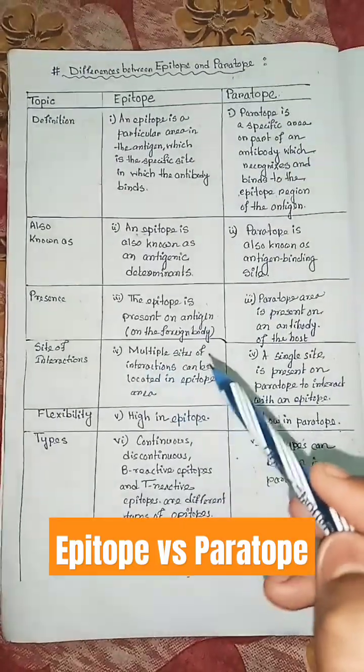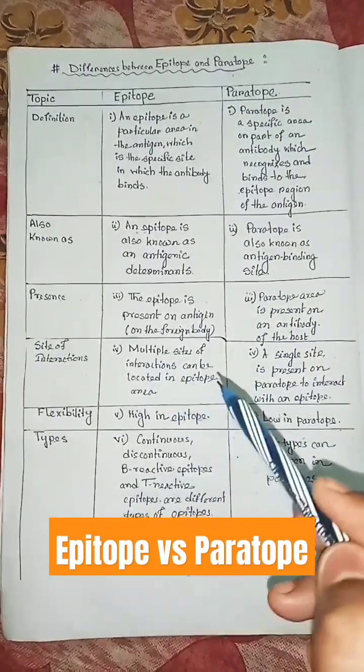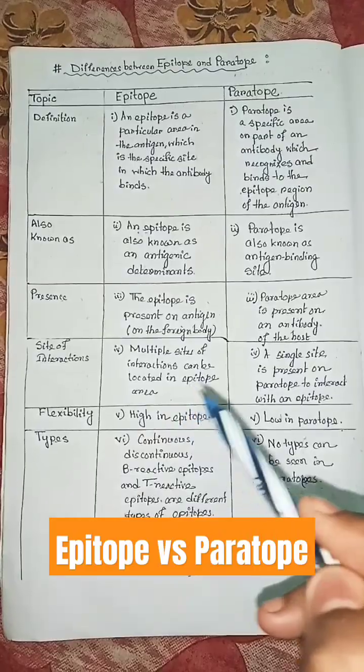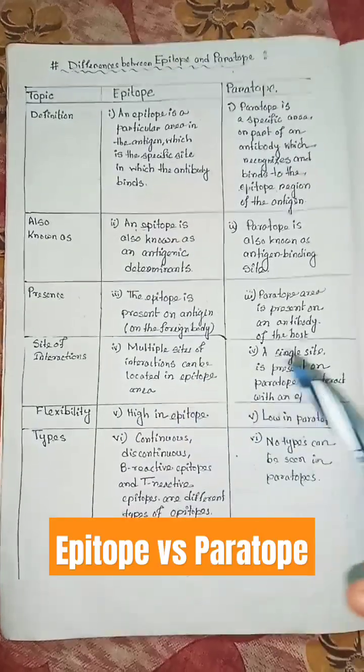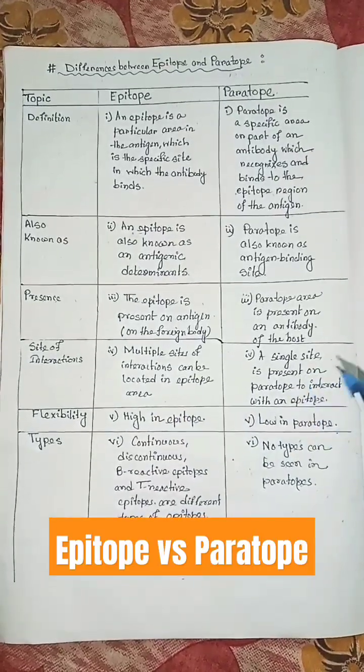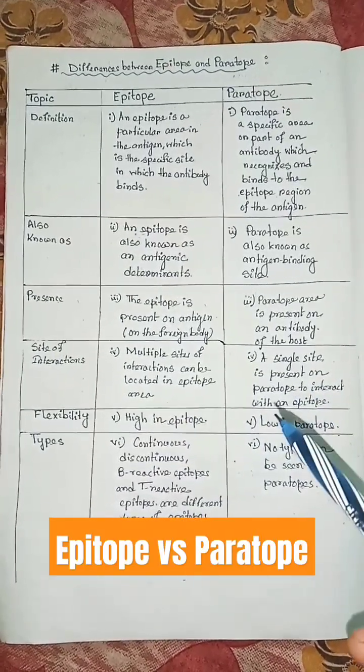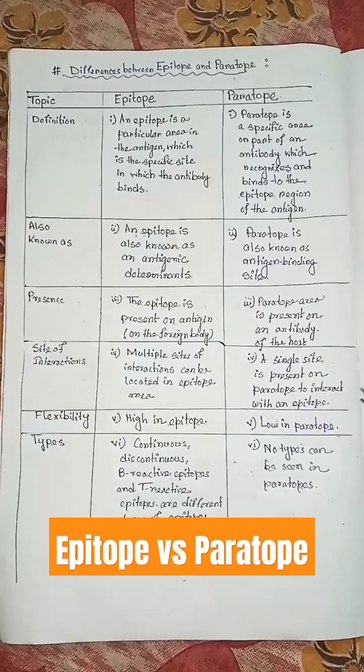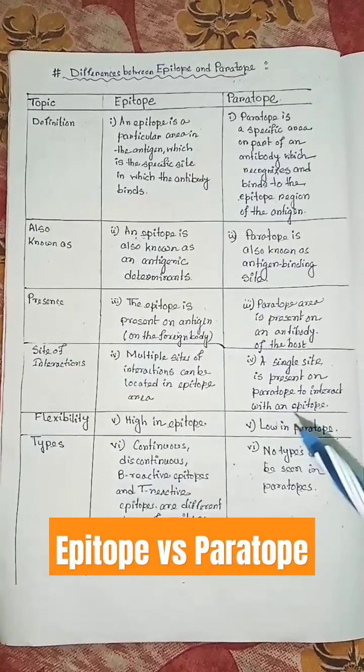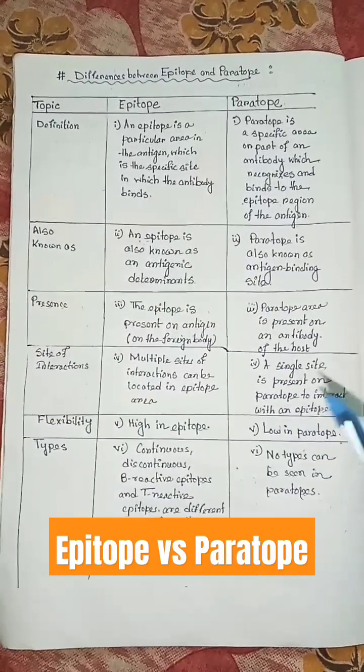Multiple sites of interaction can be located in the epitope area. A single site is present on the paratope to interact with an epitope.